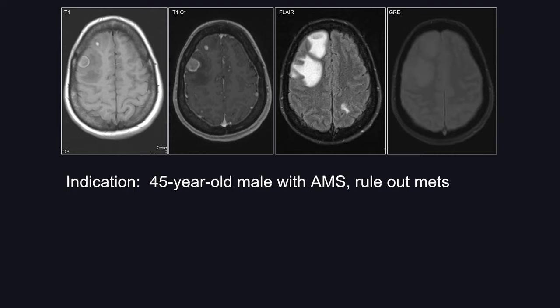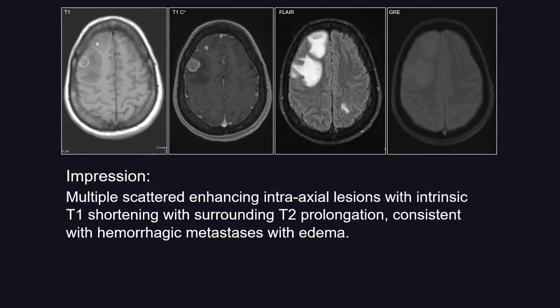In this particular report, the impression reads: there are multiple scattered enhancing intraaxial lesions with intrinsic T1 shortening and surrounding T2 prolongation, consistent with hemorrhagic metastases with edema. Now, do you agree with that assessment 100%? Why or why not?